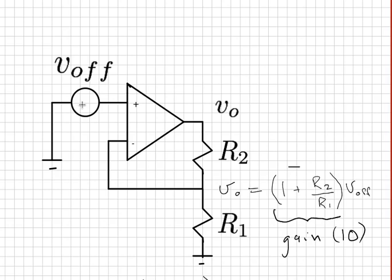So remember, the formula for the output voltage as a function of input voltage was times 1 plus R2 over R1 times the input voltage. And also notice that this offset voltage takes the place of the input voltage. Here we put a wire in, 0 volts,